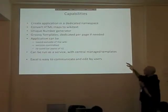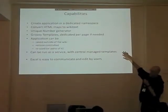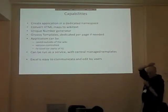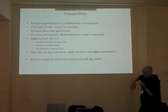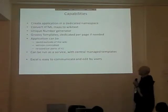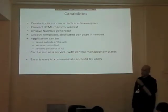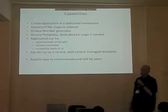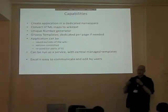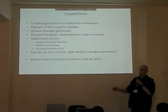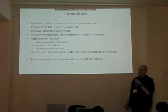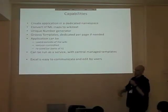So what can I do with this? I can create an application in a dedicated namespace. I can convert HTML maps to wiki text maps. There is a unique number generator that is not really finished yet, but the intention is that it also takes care that all numbers are really being used and issued — because for invoices, for instance, you cannot have some numbers that are lacking. You really have to issue all numbers.